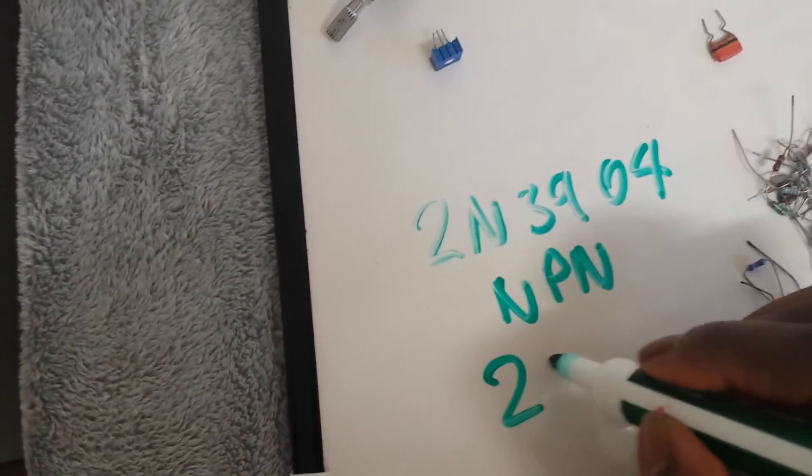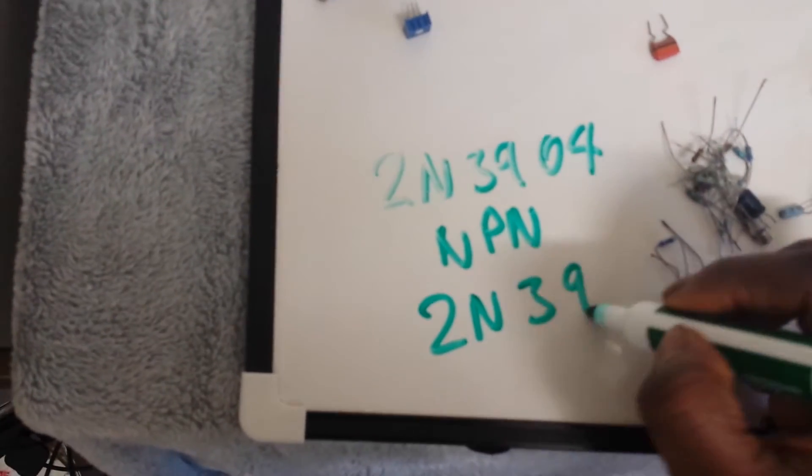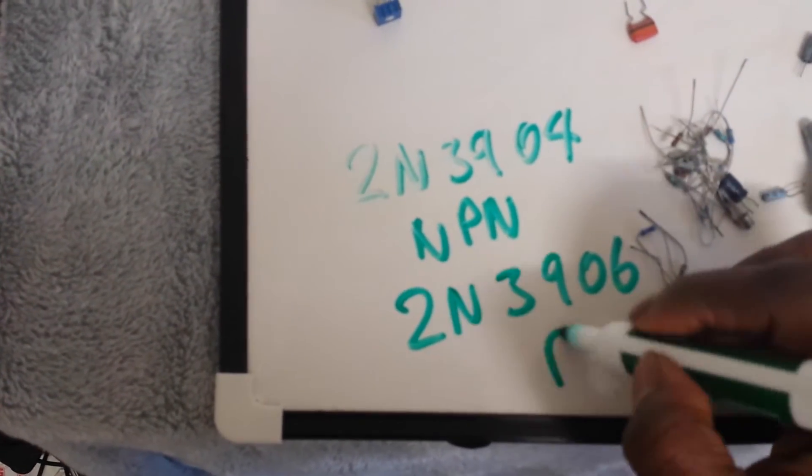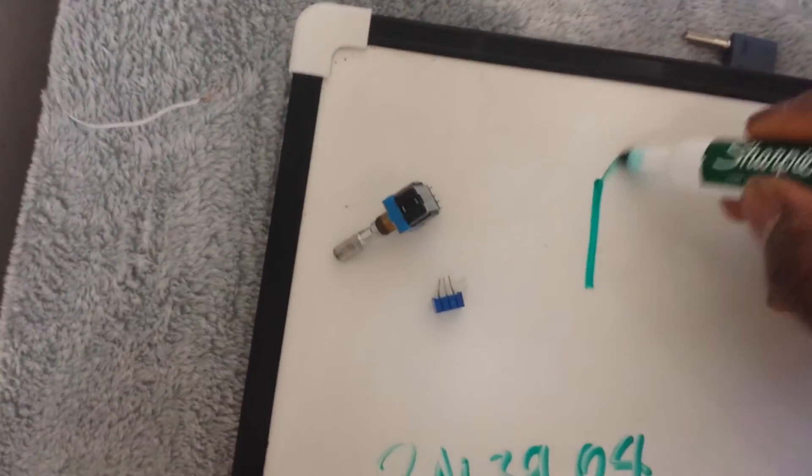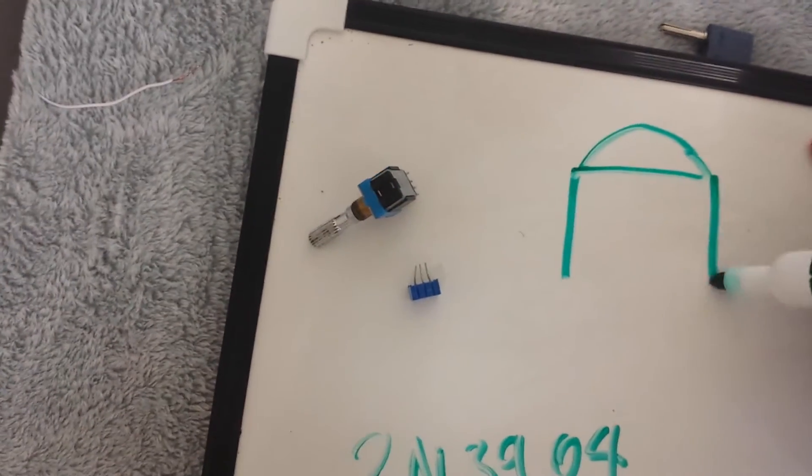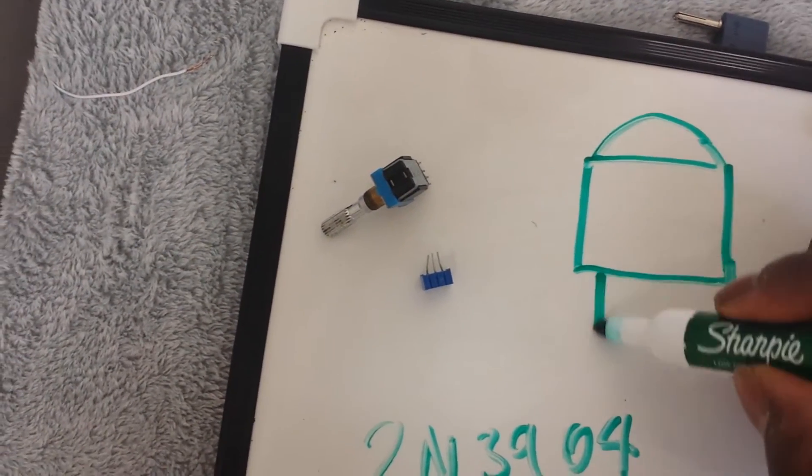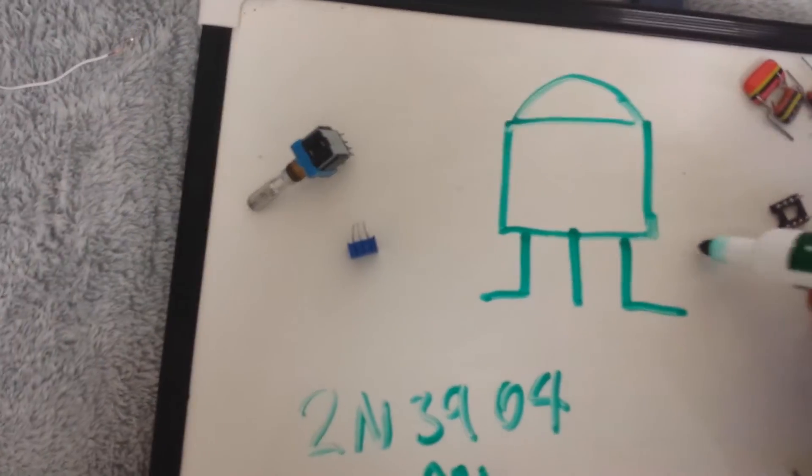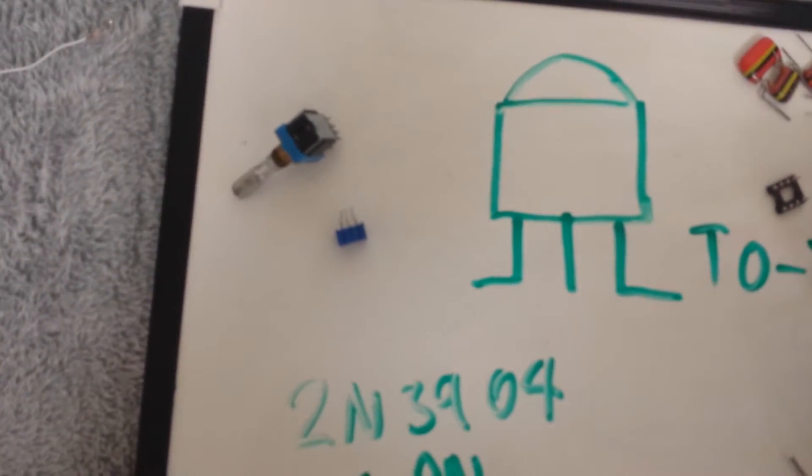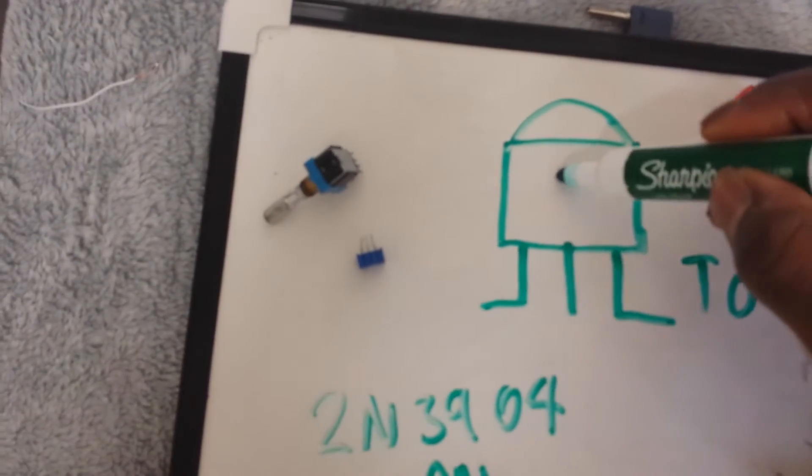Or the 2N3906 which is the PNP. Now the thing about these particular transistors is that they come in a case which is known as the TO-92 case which is a plastic sort of case you see on these type of transistors.